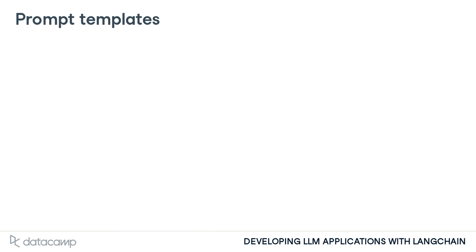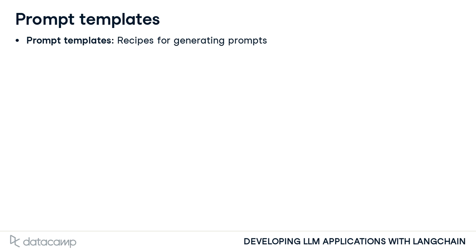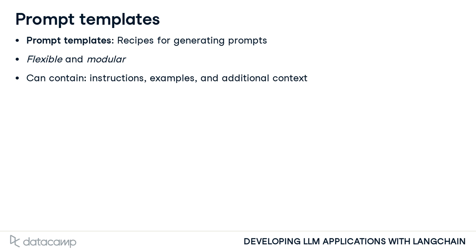Once we've selected a model, we can begin prompting it by utilizing PromptTemplate. PromptTemplates act as recipes for generating prompts from user inputs in a flexible and modular way. A template can include instructions, examples if we are wanting to few-shot prompt, and any additional context that might help the model complete the task.